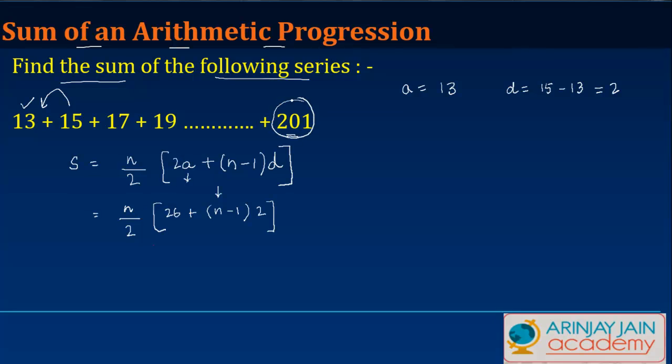But I know the last term. We know that the nth term can be found by a plus n minus 1 times d. In other words, 201 equals 13 plus n minus 1 times 2.